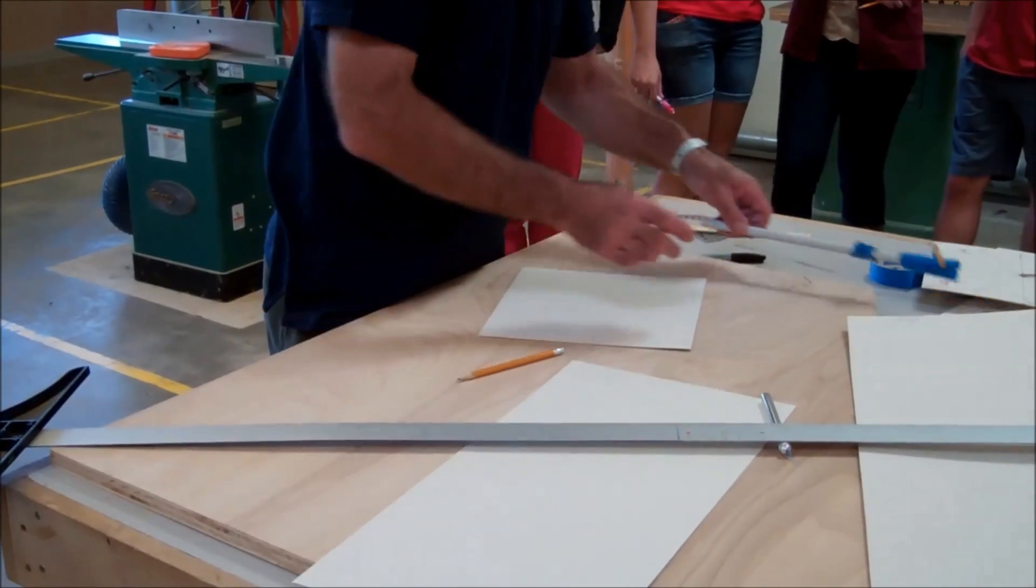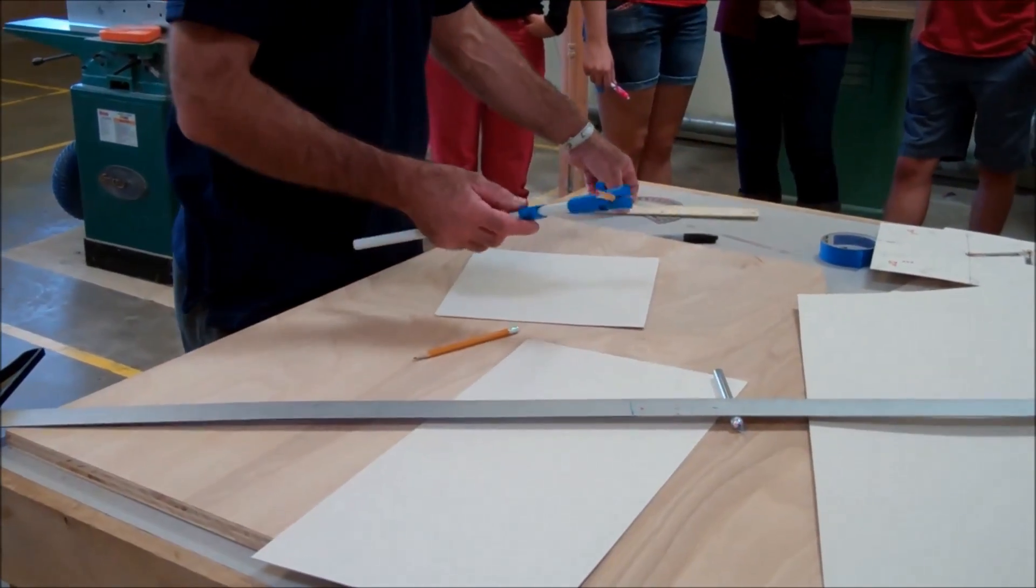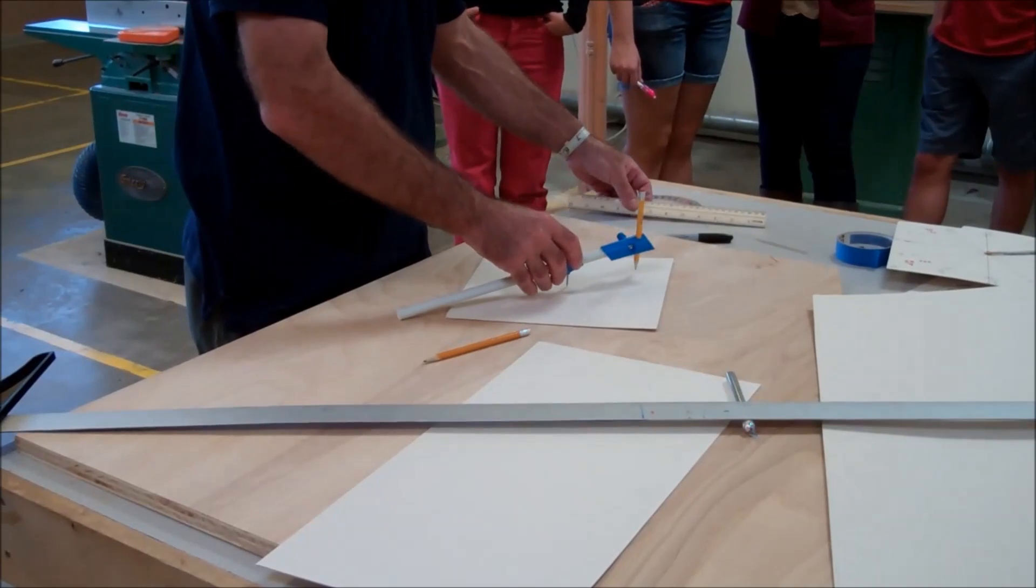Once I have my center point, I'm going to use a compass, set that compass on 4 inches, then I'm going to draw my circle. So my circle's all drawn, 4-inch radius.